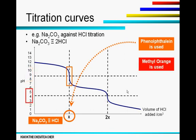When methyl orange is used, its working pH is between 3 and 5, and that coincides with the second equivalence point of sodium carbonate. Hence, when one mole of sodium carbonate reacts with two moles of HCl.